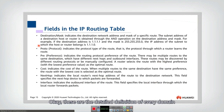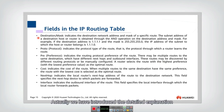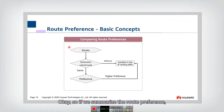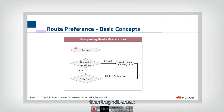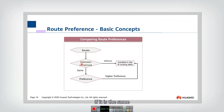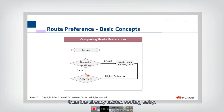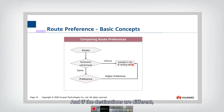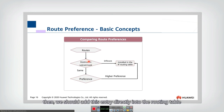These are the detailed definitions of every field in the routing table, as introduced in the previous slides. To summarize how route preference works: when a new routing entry arrives, the router first checks whether the destination subnet and mask already exist in the routing table. If the destination is the same, it compares preferences — if the new entry has higher preference, it replaces the existing one. If the destinations are different, the entry is added directly into the routing table without comparing preference.